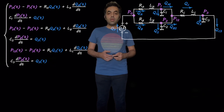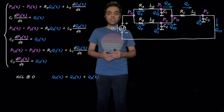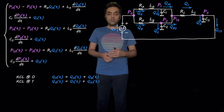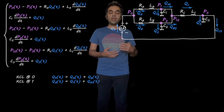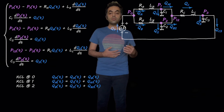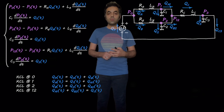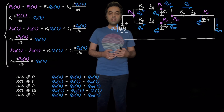So let's start with writing KCL and KVL. KCL at point zero gives us QP equals QA plus QB. KCL at point one gives us QA equals Q1 plus QA1, because QA is the only flow rate entering this node and Q1 and QA1 are the flow rates leaving this node. Similarly, for node two, we can say QB equals Q2 plus QB2. When we look at point 1-2, the flow rates entering this node are QA1 and QB2, and the flow rate leaving that node is QC. And KCL at point three gives us QC equals Q3 plus QC3.